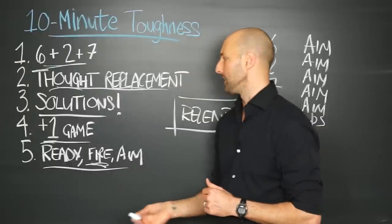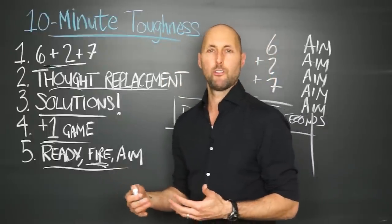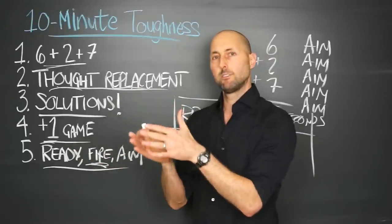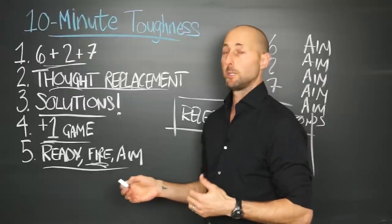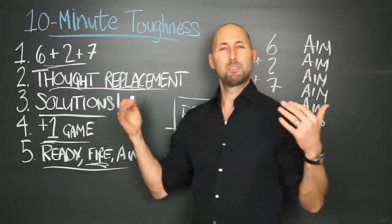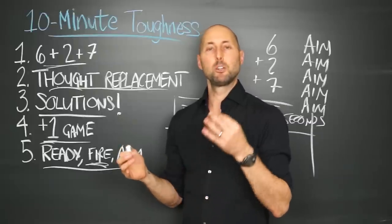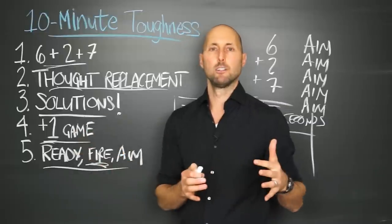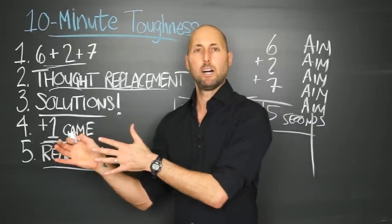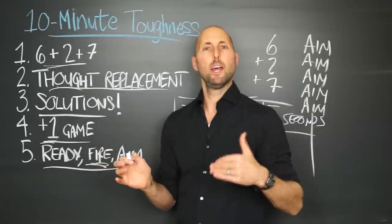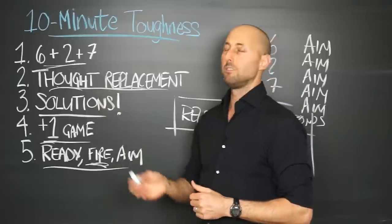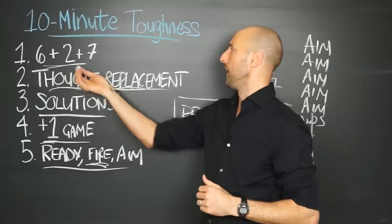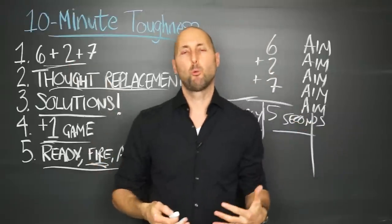So there you go. Five quick, big ideas. Ready, fire, aim. Just go for it. Put yourself out there. Learn a little bit. Get a little better. Play the plus one game. Know that you're going to progressively get better into excellence and let your goals be a byproduct of that commitment. Solutions. Obsess about solutions. Be persistently and relentlessly solution focused, not problem focused. Quickest way to move from a victim to a creator is to shift from complaining to saying, what do I want? What do I want right now? And then how can I take a baby step toward it? Thought replacement. Negative thought. Bump it out with a positive thought. Big idea. And then six plus two plus seven. Let's wrap it up with one more deep breath. Fifteen seconds. Inhale to six.